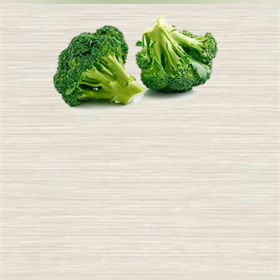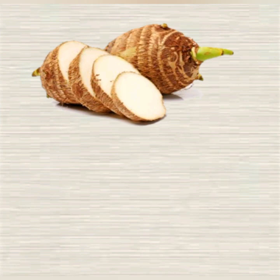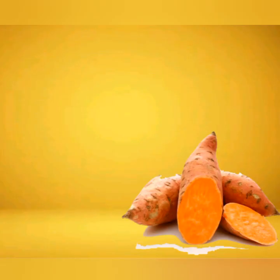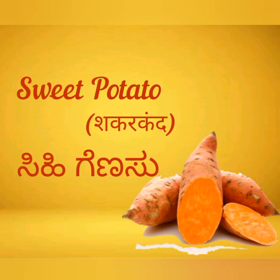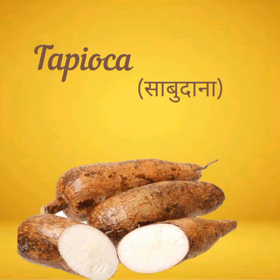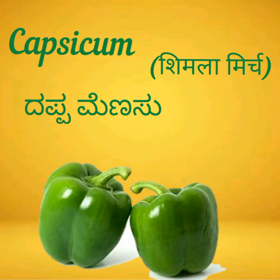Broccoli — kosu gadde. Colocasia — kesu vidha gadde. Now, let's learn the vegetables which end with the word genasu or menasu. Sweet potato — sihi genasu. Tapioca — mara genasu. Capsicum — dappa menasu or donne menasu.